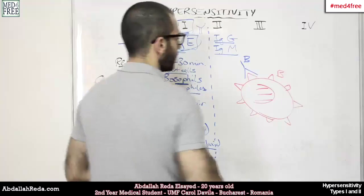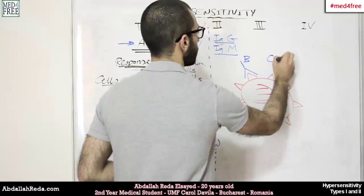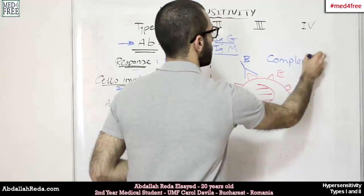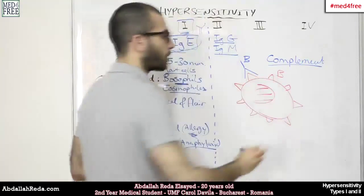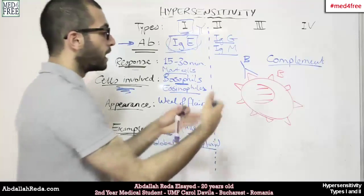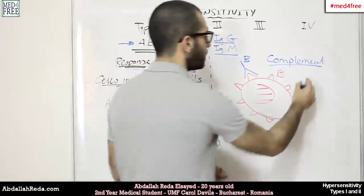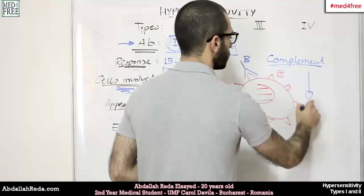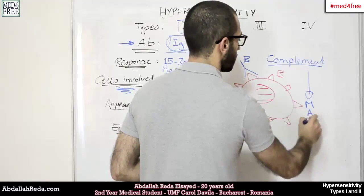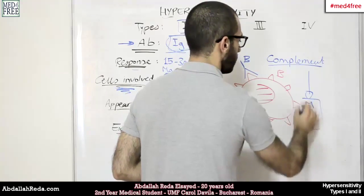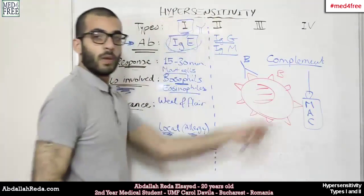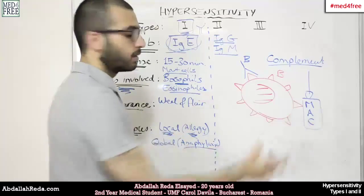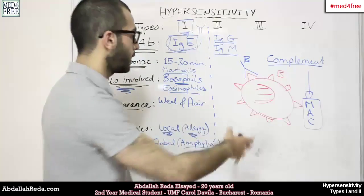And they would activate something called the complement. The complement is a sequence of proteins. They activate each other in an arranged sequence. At the end, they form something called the membrane attack complex. From the name, MAC, membrane attack complex.